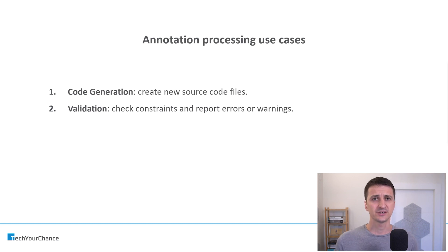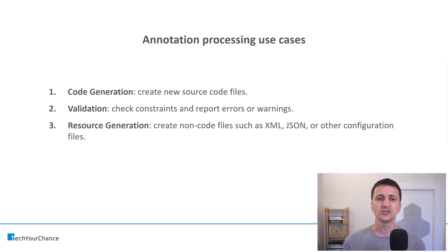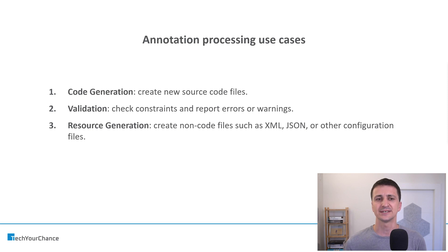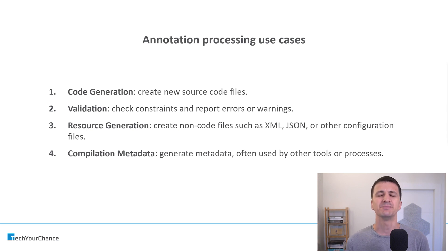In addition, you can use annotation processors for validation. For example, in Java — unlike Kotlin — we don't have typed nullability; we have non-null and nullable annotations, and various tools can process these annotations to find instances where nullability is used incorrectly, such as when you use a nullable argument without checking it for null. You can also use annotation processing to generate resources, which is similar to code generation but with an important distinction we'll discuss in a moment. Lastly, you can use annotation processors to gather compilation metadata about your source code — basically metrics that can be processed in other tools.